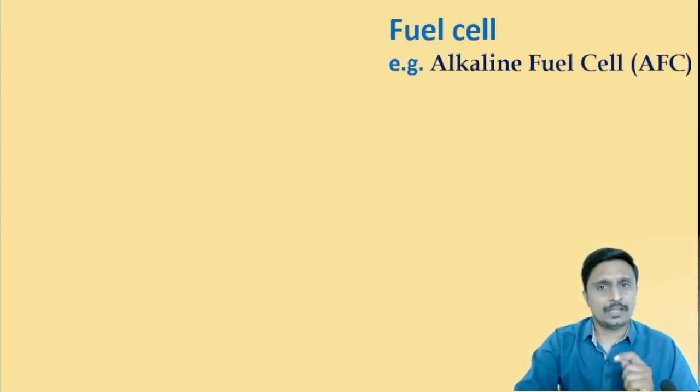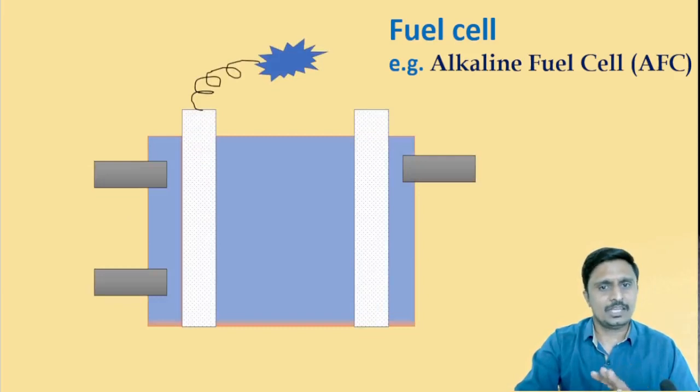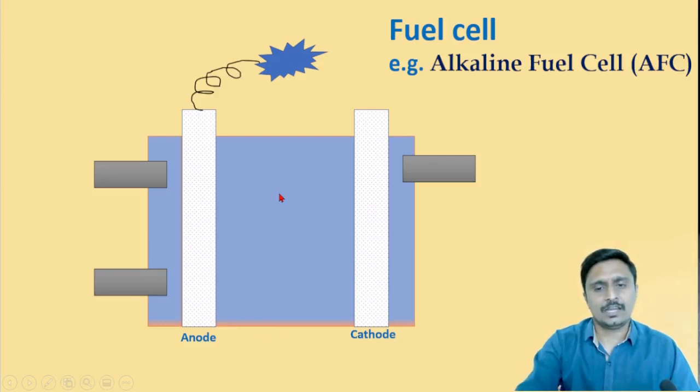Now, we will see how this alkaline fuel cell works. We will see a diagram. You will see that these are 3 inputs and outputs. These are anode and cathode. These cathode and anode are dipped into this particular hydroxide solution, that is your potassium hydroxide solution. We have this hydrogen gas, pure hydrogen gas and pure oxygen gas.